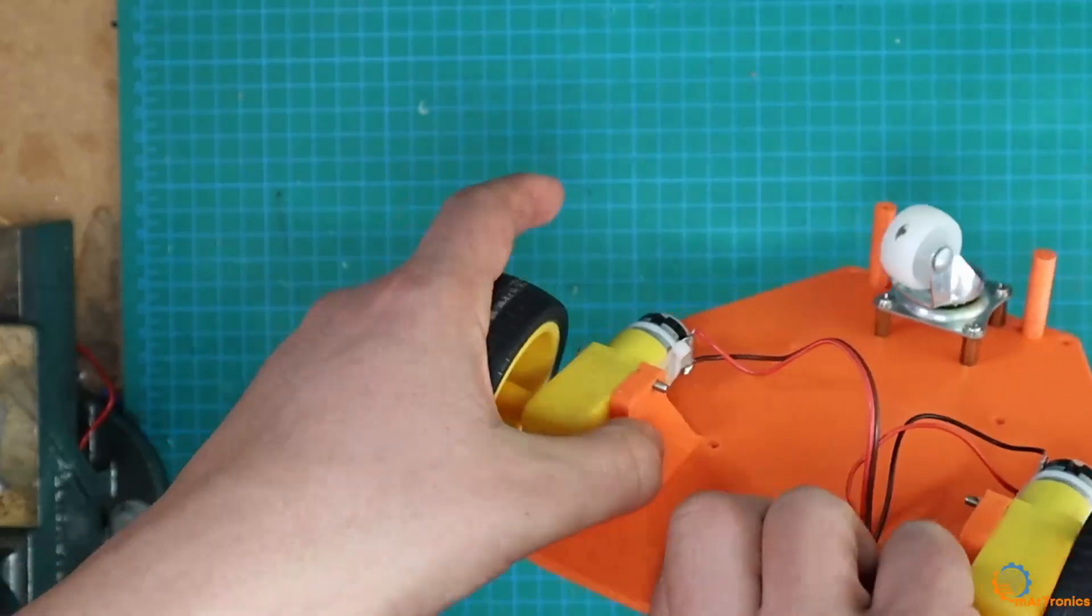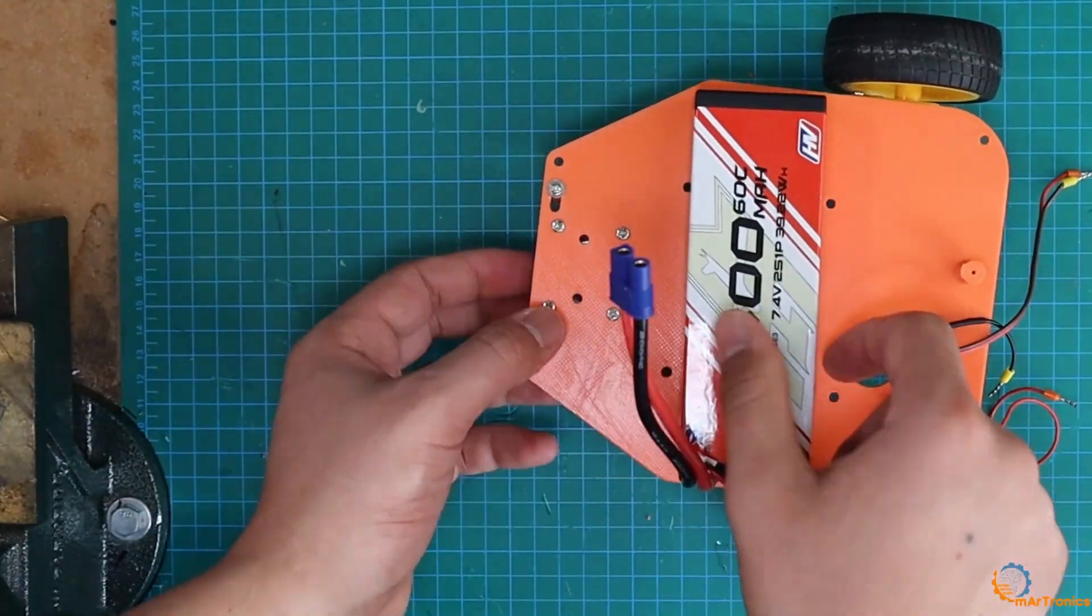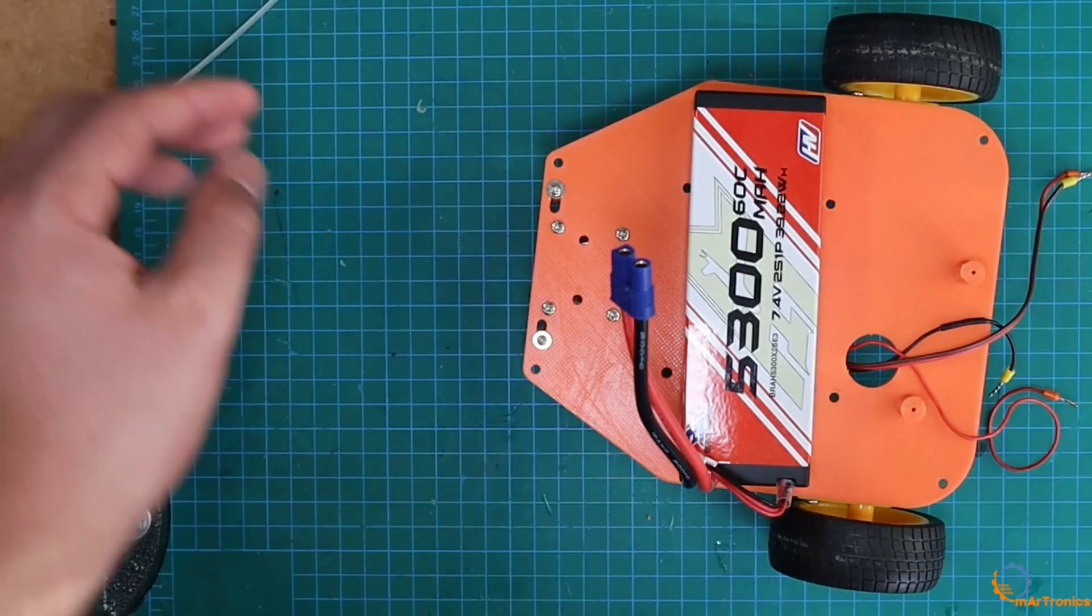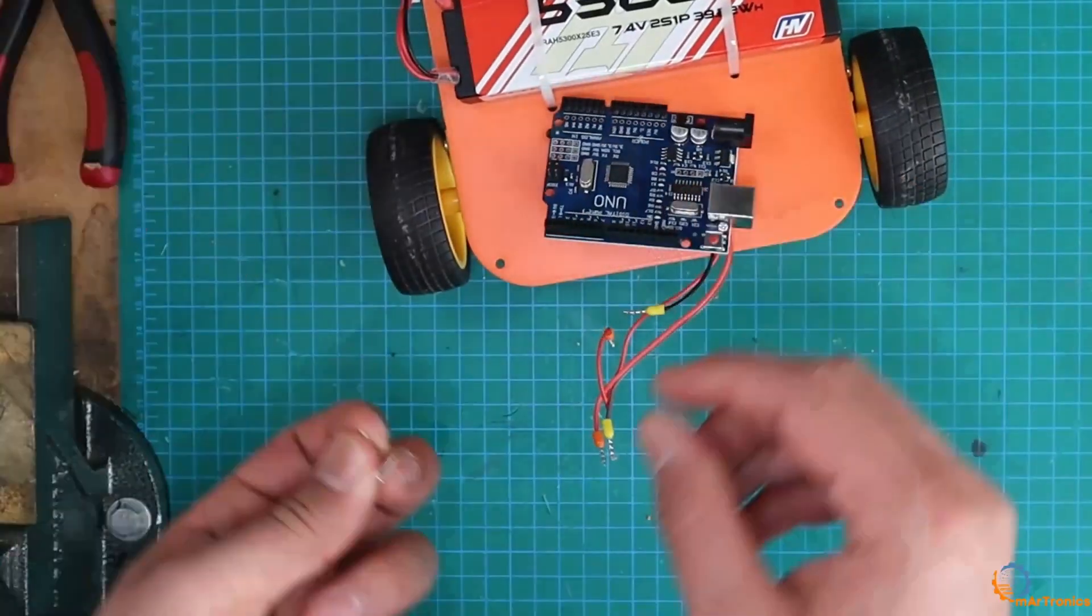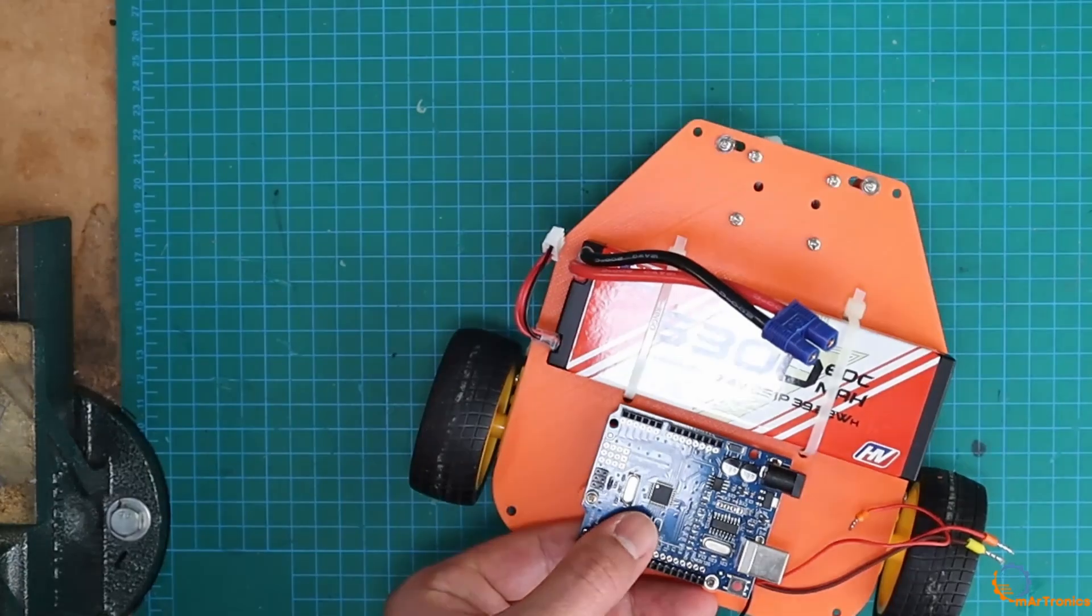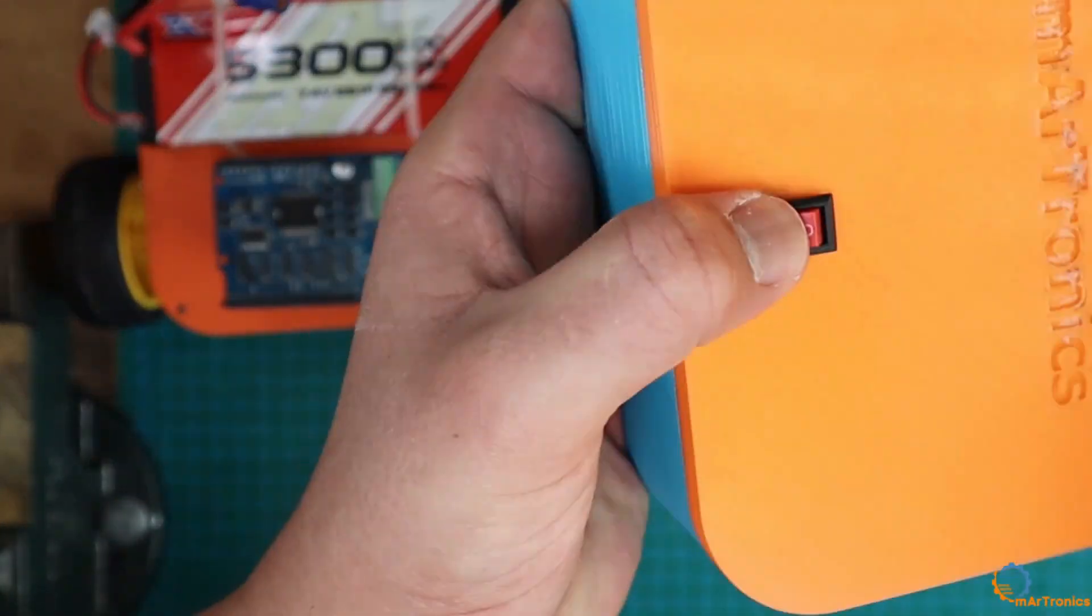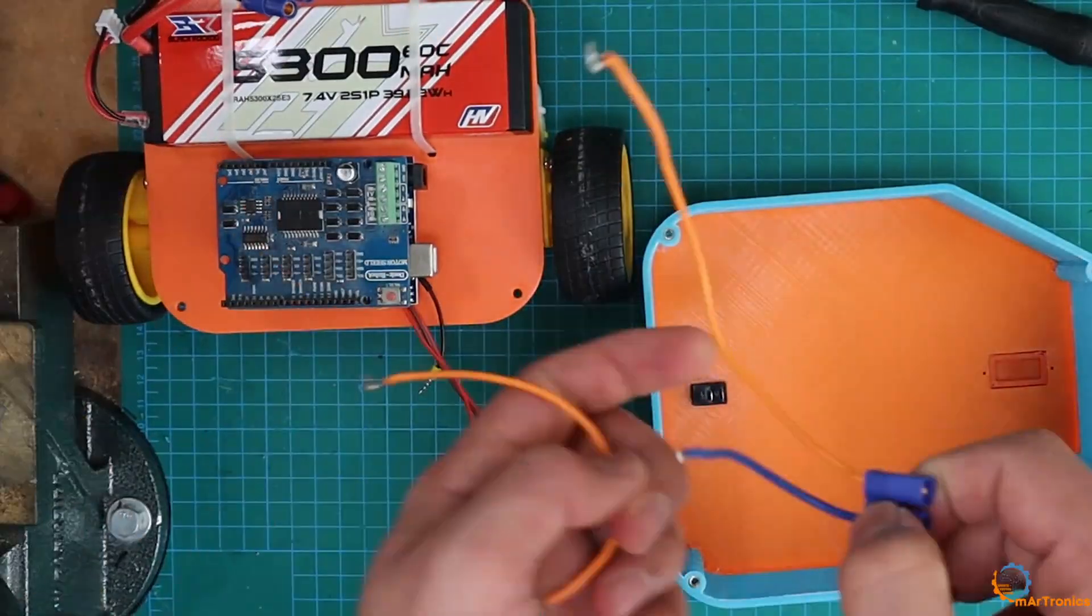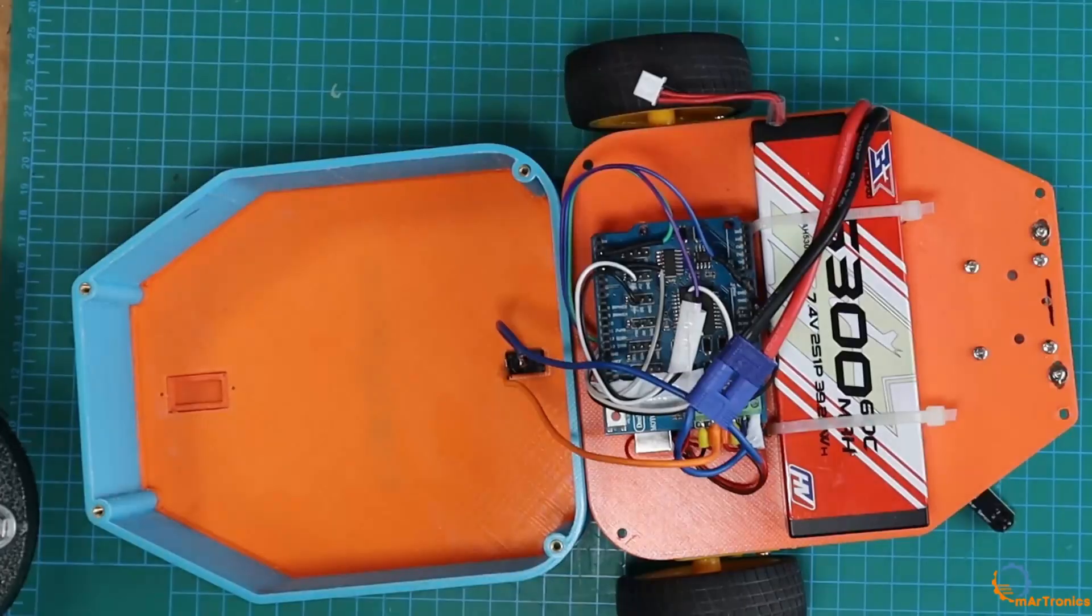I also added these spacers to mount the sensors. Then, I installed the wheels onto the motors, and I added the 7.4V battery. I secured it with these plastic straps. After that, I mounted the control board, the Arduino board. Then, I added the power switch on the upper part.